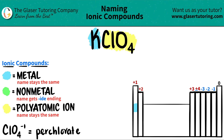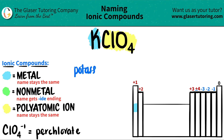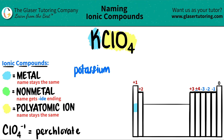Now let's just name it. The metal name always stays exactly the same, so K is just going to stay as potassium. And then the polyatomic ions — those names always stay the same, that's why you've got to memorize them — so this would be perchlorate.